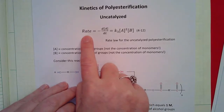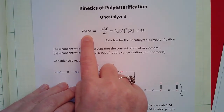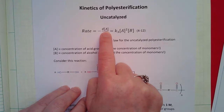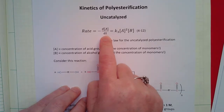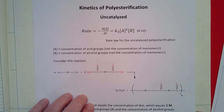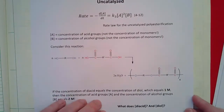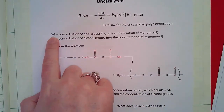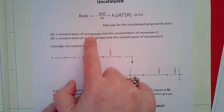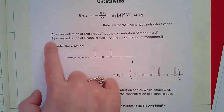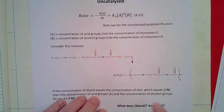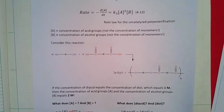Here's the rate law: the rate of polyesterification — the rate of polymerization — we can measure it as the rate of decrease of the acid groups with respect to time, because as we're consuming the acid we're making the polyester. It's very important to realize that the brackets always mean concentration, but the concentration of A is the concentration of acid groups, not the concentration of monomers, and B is the concentration of alcohol groups.